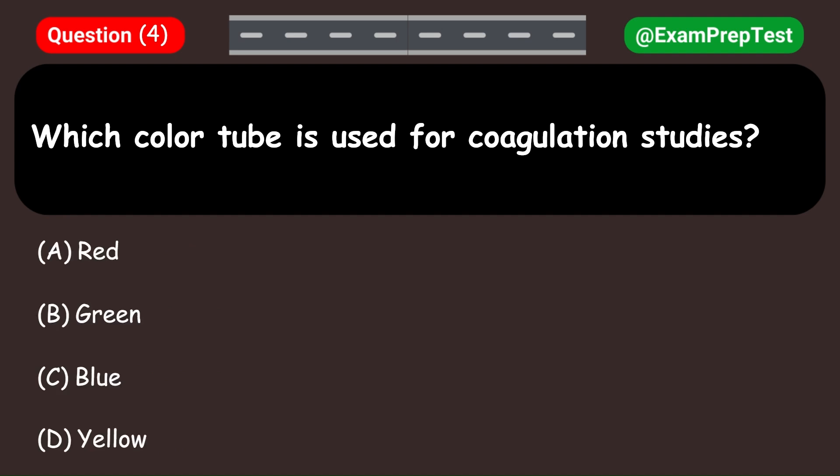Which color tube is used for coagulation studies? A. Red. B. Green. C. Blue. D. Yellow. Answer: C. Blue.